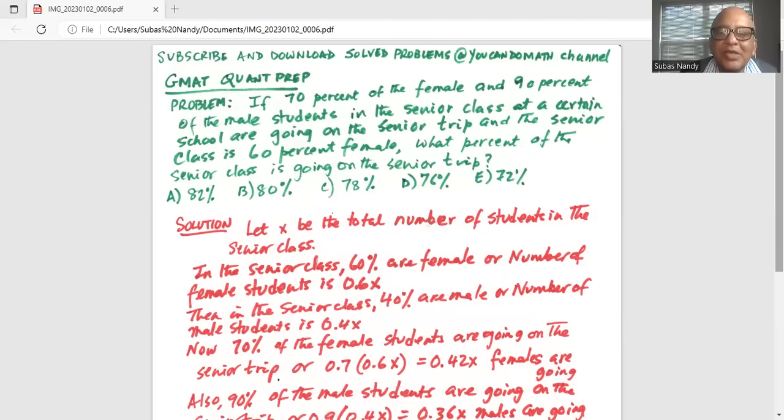Let X be the total number of students in the senior class. In the senior class, 60% are female or the number of female students is 0.6X. Then in the senior class, 40% are male or number of male students is 0.4X.